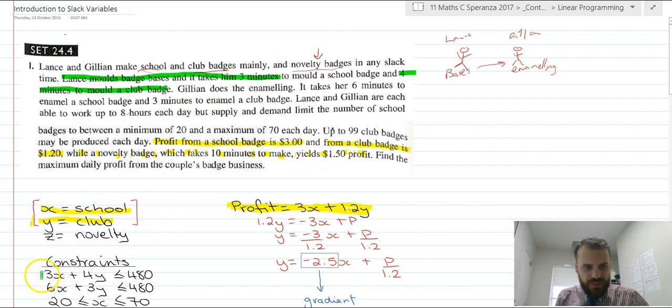So our first constraint is this: three minutes times the number of school plus four times the number of club has to be less than the total amount of time Lance has to work. And it says Lance is able to work eight hours each day. So there's our first constraint. Eight hours is equal to 480 minutes. So 3 times the number of school badges, plus 4 times the number of club badges, has to be less than 480.